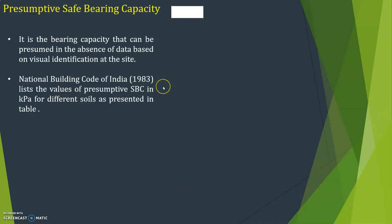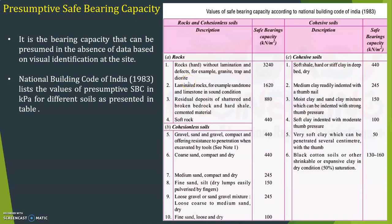Let us discuss presumptive safe bearing capacity (SBC). It is the bearing capacity that can be pre-assumed in the absence of data, based on visual identification at the site. The National Building Code of India 1983 lists the values of presumptive SBC in kPa for different soils. If it is not possible to get the SBC at the site, we can use these values as a reference.